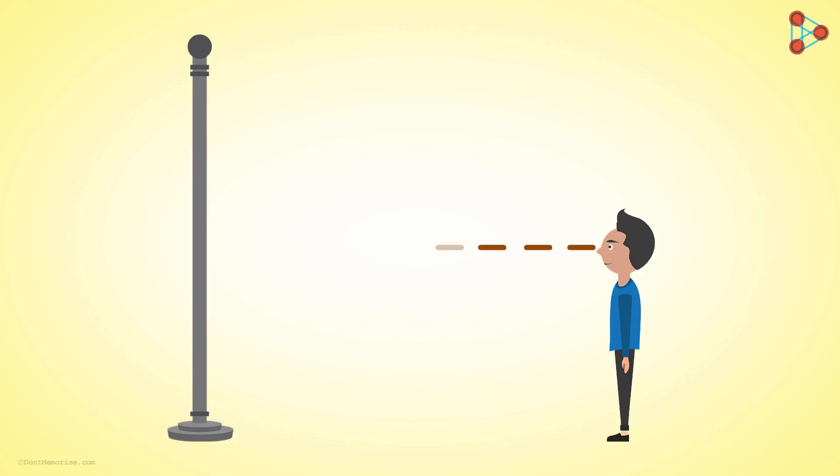The line drawn from the eye of the person to the distant point where the person is looking is called line of sight. This is the line of sight.